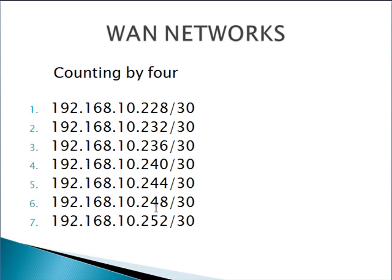All of these WAN networks count by 4, so your seven WAN addresses will be: 228, 232, 236, 240, 244, 248, and 252 — those are your WAN network addresses.